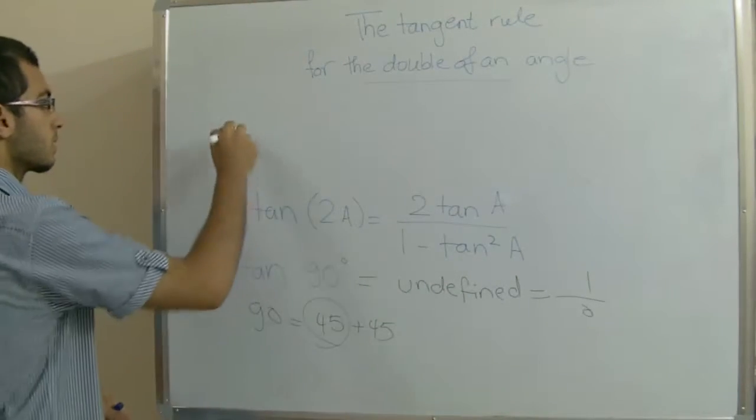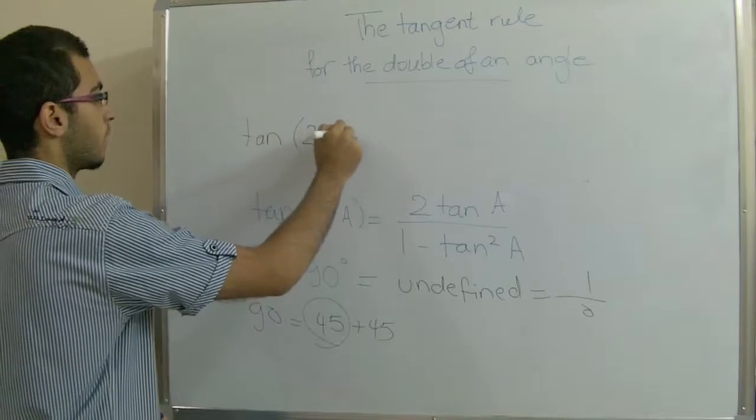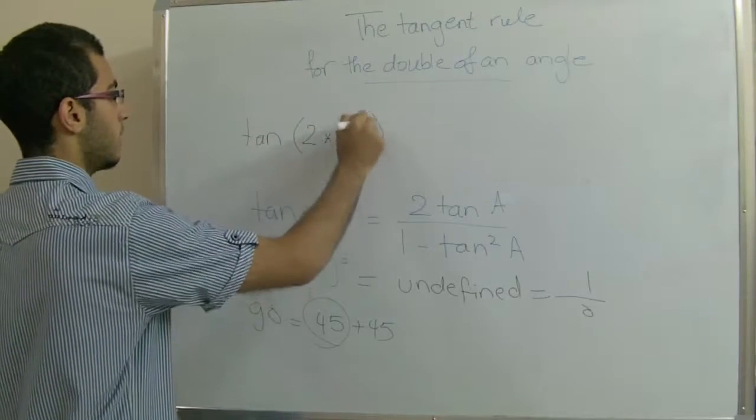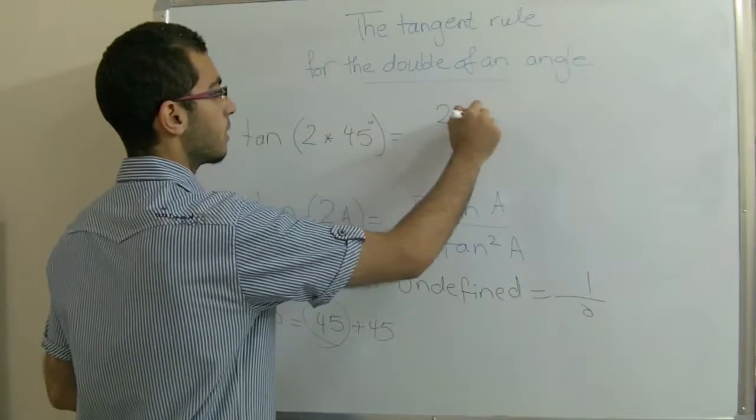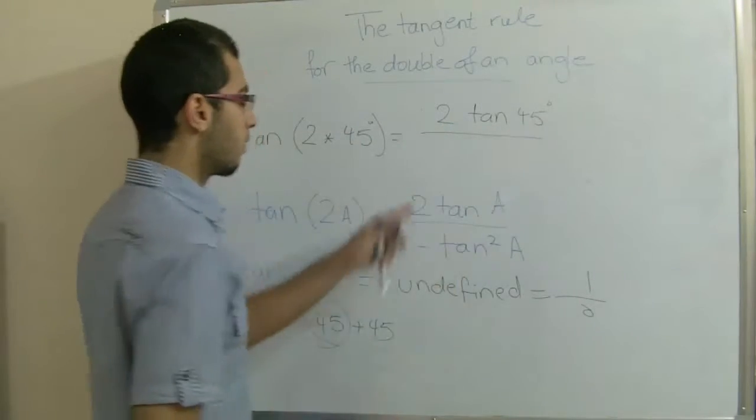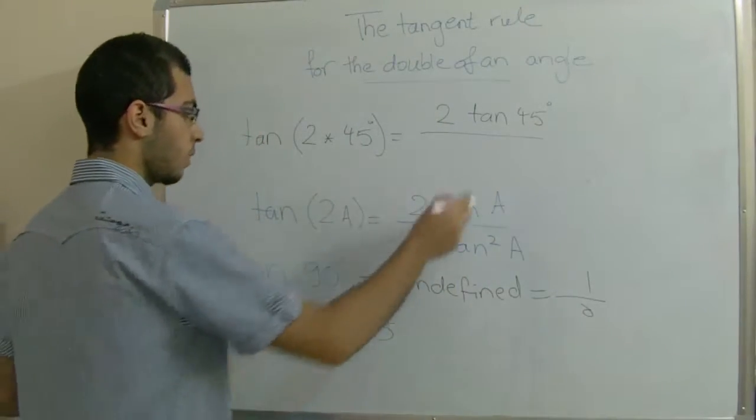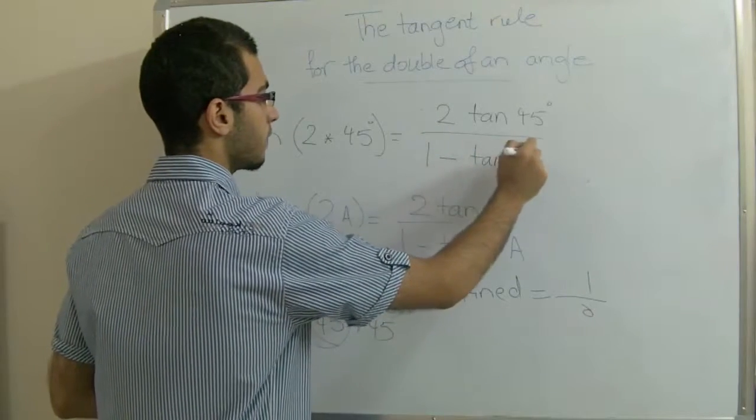So tan(2 × 45 degrees) equals 2 tan 45 over 1 minus tan 45 squared.